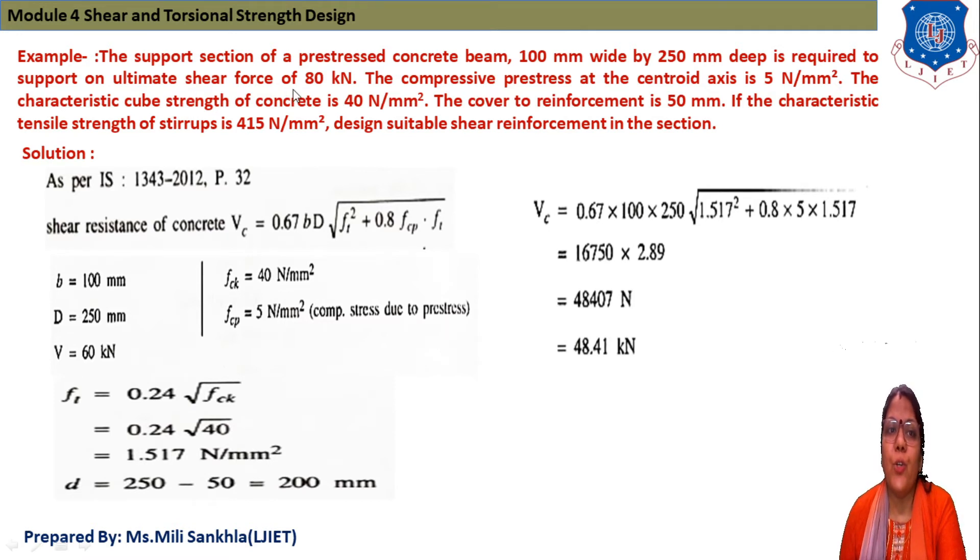The compressive prestress at the centroidal axis is 5 N/mm², and the characteristic cube strength of concrete is 40 N/mm². Cover to reinforcement is 50 mm, and the characteristic tensile strength of stirrups is 415 N/mm². Design suitable shear reinforcement in the section.